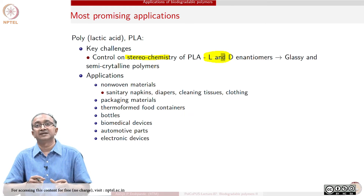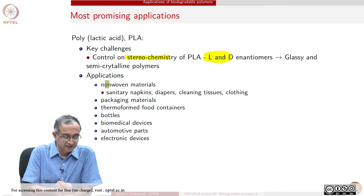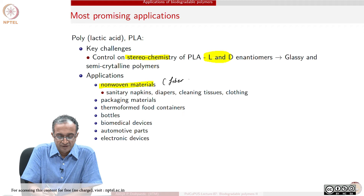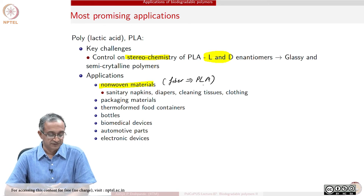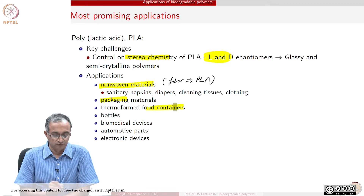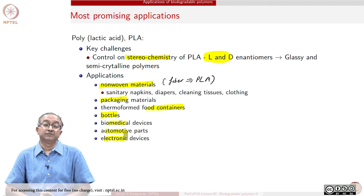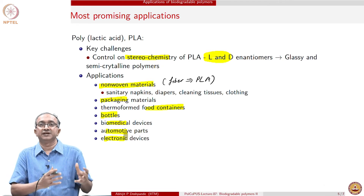Different additives are added to polylactic acid to improve processability. PLA is used to quite a significant extent as fiber in non-woven materials. PLA fiber is quite common for making disposable products such as sanitary napkins, diapers, and tissues. It has also been used as packaging materials, food containers, and bottles, as well as molded products for electronic, automotive, and biomedical applications — all keeping in mind the overall biodegradability aspect of polylactic acid.